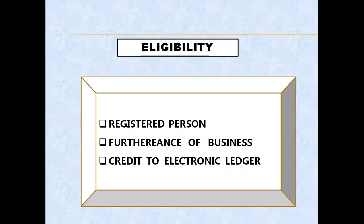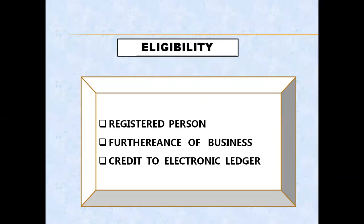The basic eligibility criteria for taking ITC: Input Tax Credit is available only to a registered person who is registered under GST. Moreover, it is available in respect of input supplies of goods or services which are used or intended to be used in the course or furtherance of business. ITC is not available for non-business purposes. To avail the benefit of ITC, it should be credited in the electronic credit ledger.